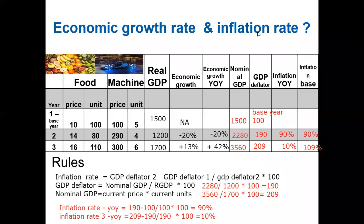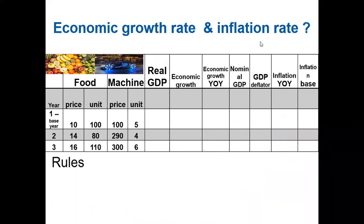In summary, we calculated economic growth and inflation rate. Year two showed negative growth — a recession. Year three showed positive output growth. Year-to-year price increases were 90 percent and 10 percent for years two and three respectively; base year comparison gives 109 percent for year three. Using nominal GDP to measure economic growth would give a misleading answer. Hope you now understand how to find economic growth and inflation rate — see you in the next video!